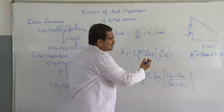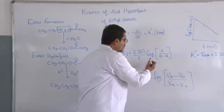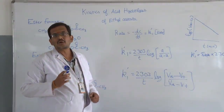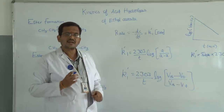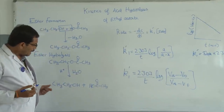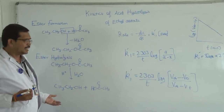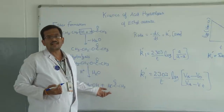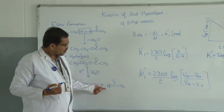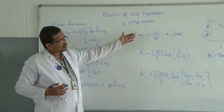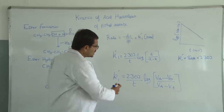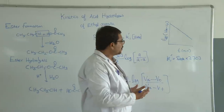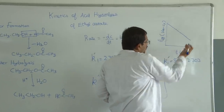In the rate equation, 'a' is the initial concentration and 'a minus x' is the concentration at time t. Measuring the concentration of ester directly is difficult, so instead we measure the concentration of the product. Alcohol cannot be estimated easily, but acetic acid can be estimated by titrating against an alkali. From this, we calculate the concentration of the ester.